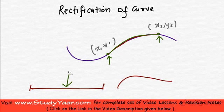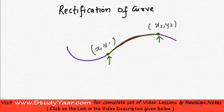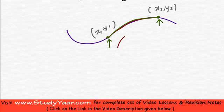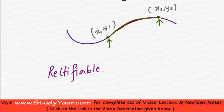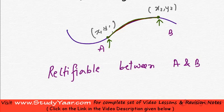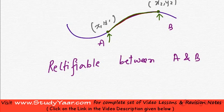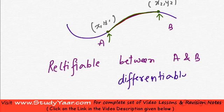Obviously you would realize that in order for you to be able to rectify a curve, your curve must be smooth. The condition is: a curve is rectifiable between a and b — where a and b are your two endpoints — if your curve is differentiable in that interval. So if it is differentiable in this interval, then only you can find the length of this arc.